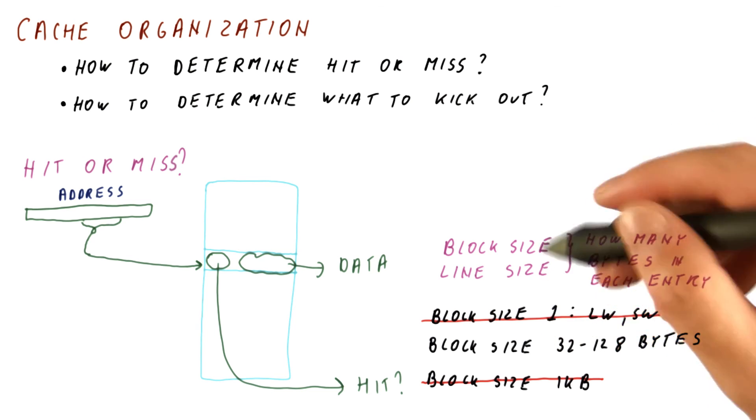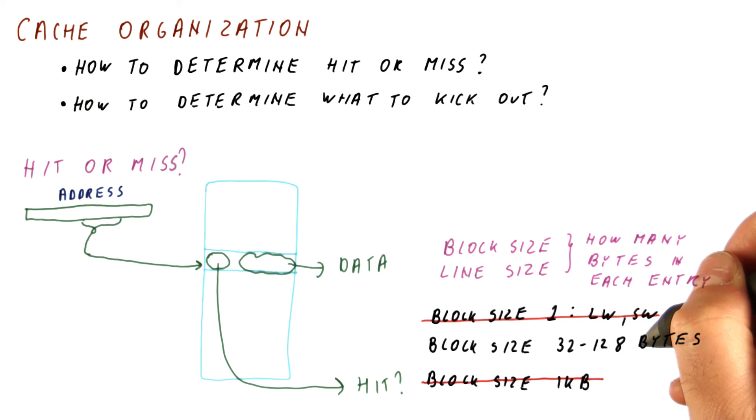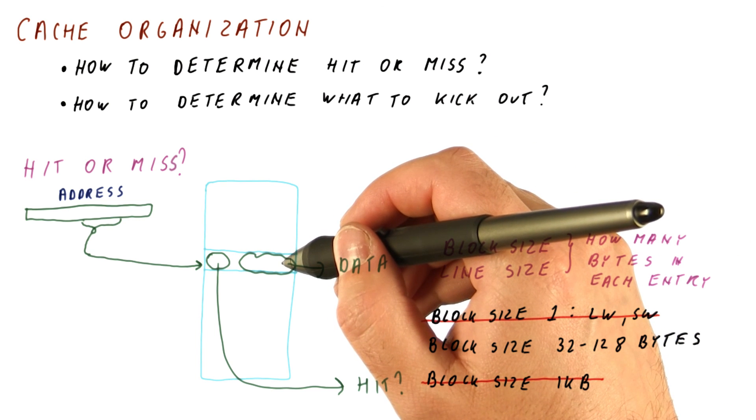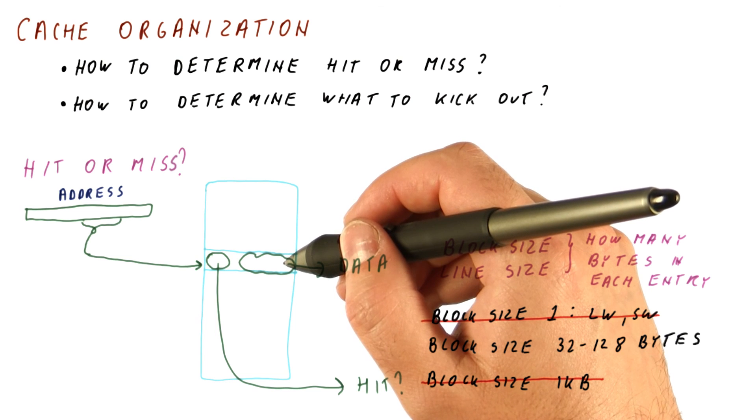So it turns out that for level one caches, at least, we don't want the block size to be too large. So block sizes of 32 to 128 bytes are a balance between getting use of spatial locality when we bring stuff in versus not being dependent too much on there being a lot of spatial locality because some programs don't have that much of it.